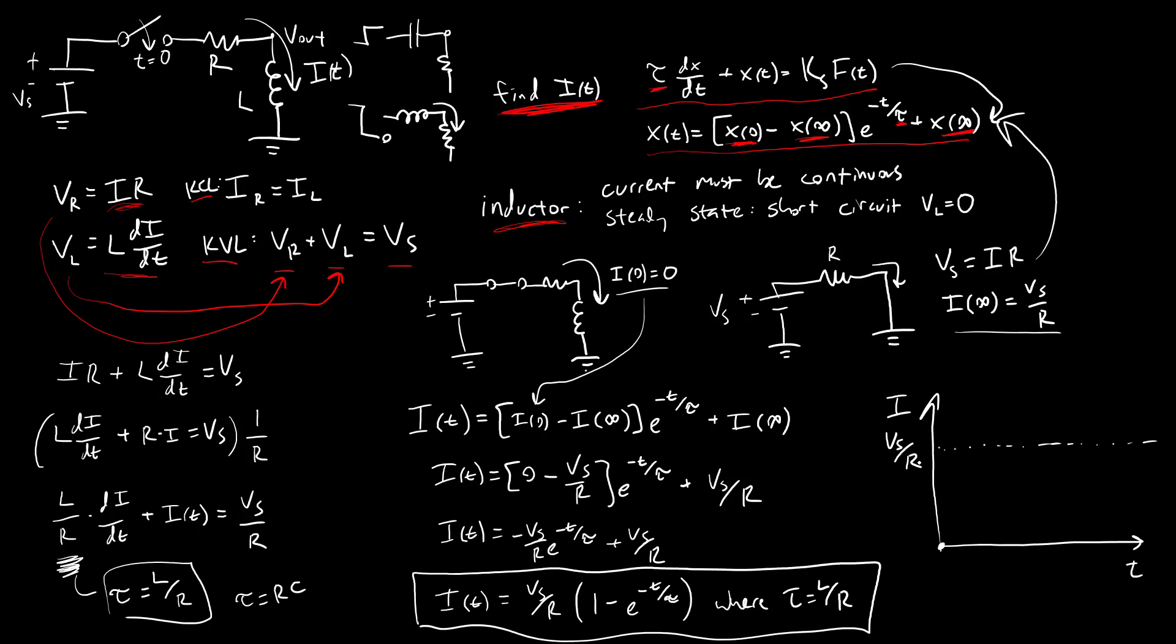And asymptotically approach our final condition of Vs over R with that characteristic first order response curve where at one time constant tau it's going to be 63.2% of the way to the final value. This time constant rule applies in this case to current instead of voltage. We talked in a previous video about how this can also happen to mechanical or thermal systems. This type of differential equation is not unique to electrical systems.